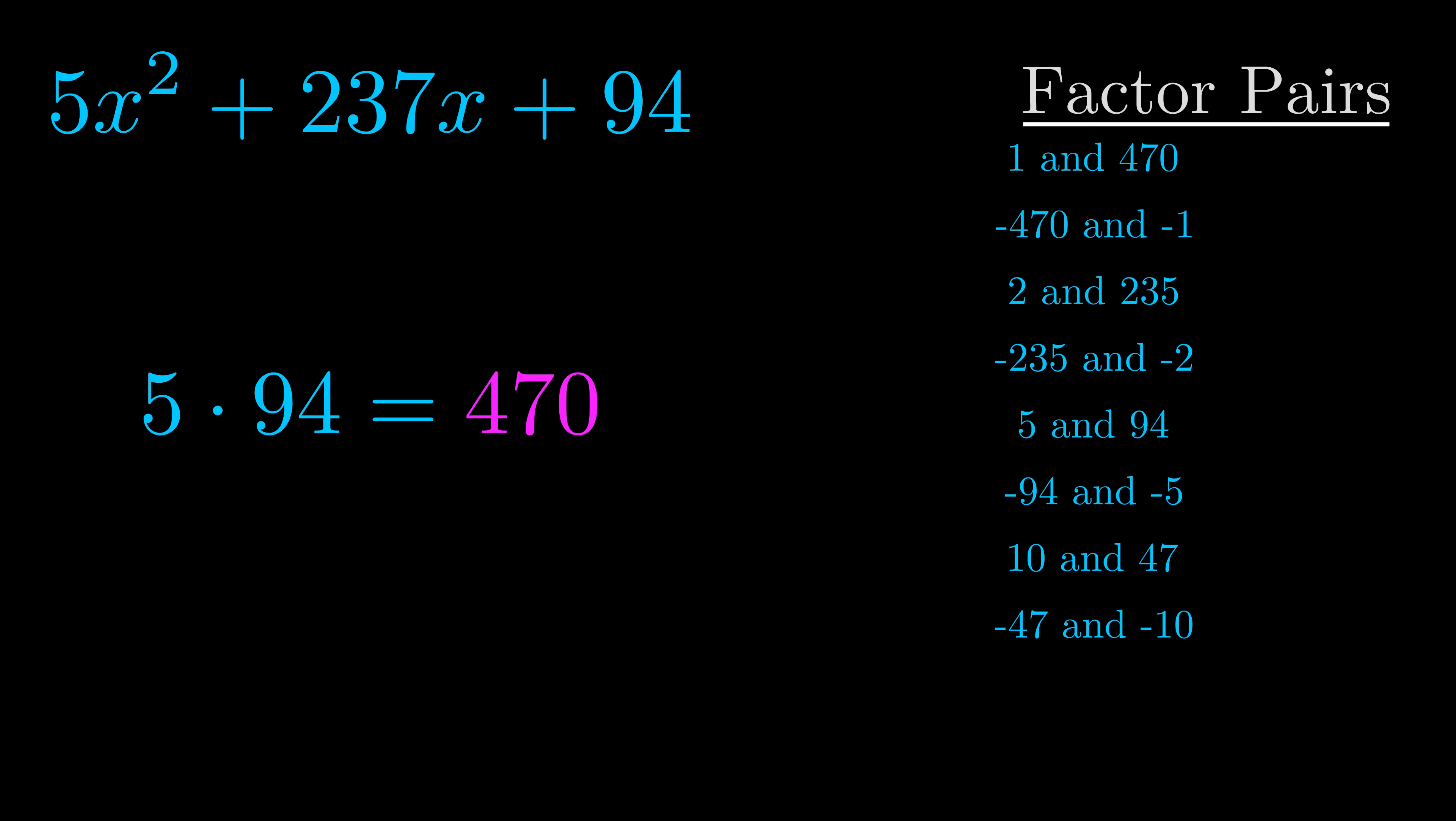Now once you have these factor pairs, the goal is to find which of these pairs adds to the b value. The b value is the coefficient on the x term.